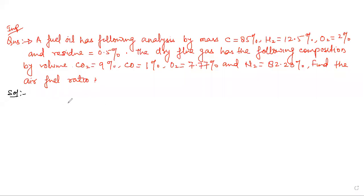The question is: a fuel has the following analysis by mass — 85% carbon, 12.5% hydrogen, 2% oxygen, and 0.5% residue. The dry gas has the following composition by volume. We need to convert mass analysis and volume analysis — CO2: 9%, CO: 1%, O2: 7.77%, and N2: 82.23% — to find the air-fuel ratio.